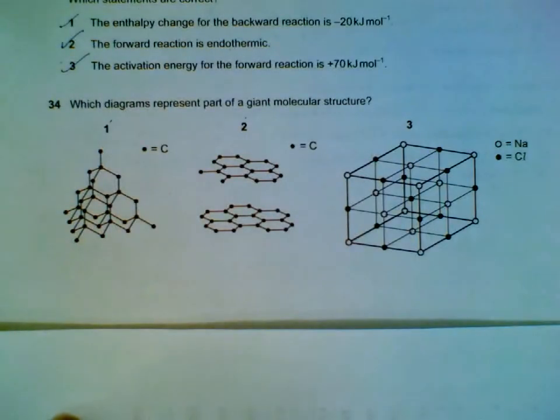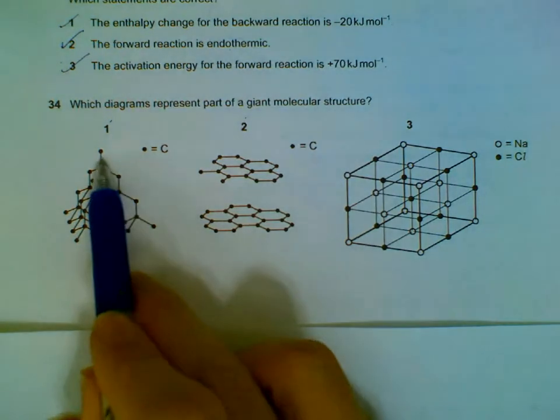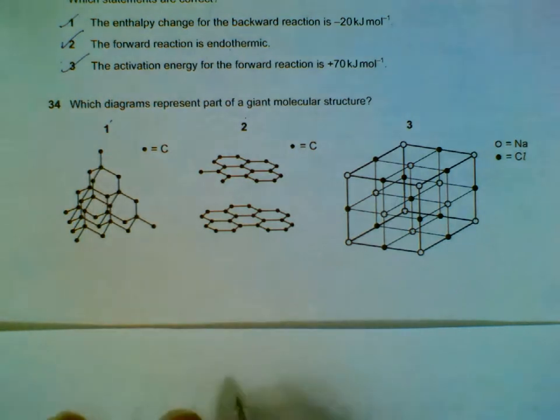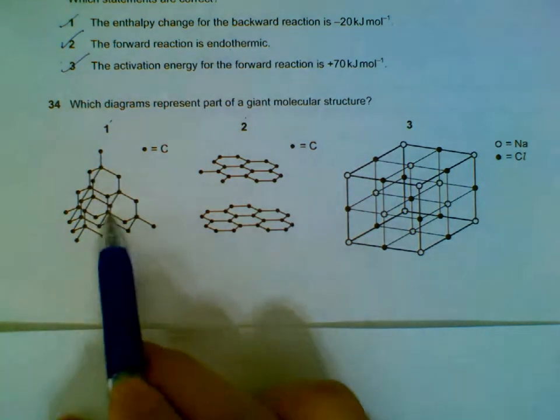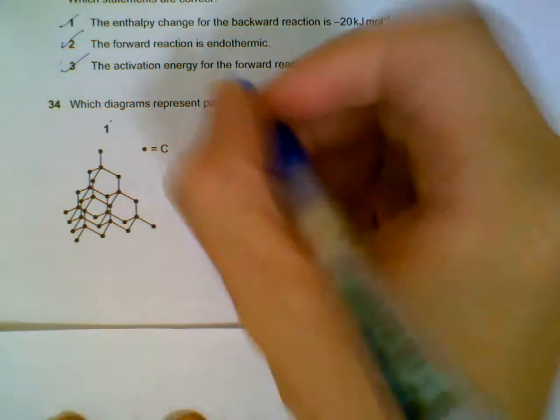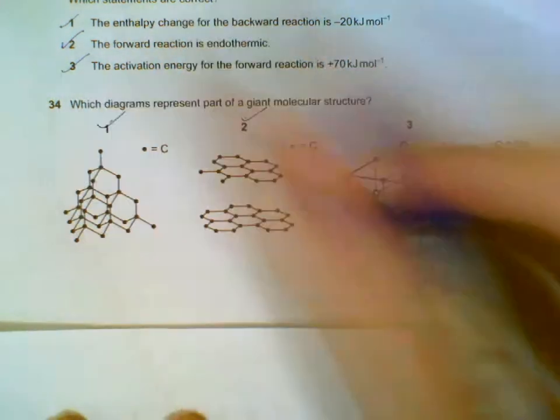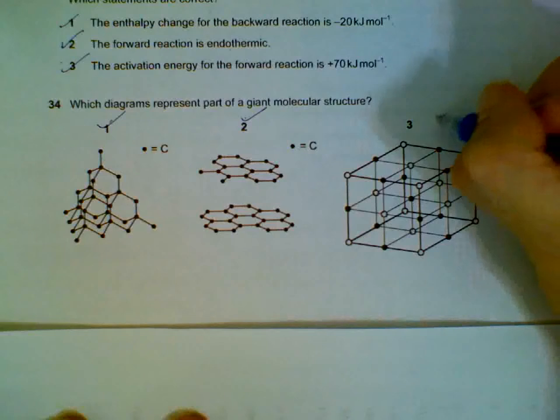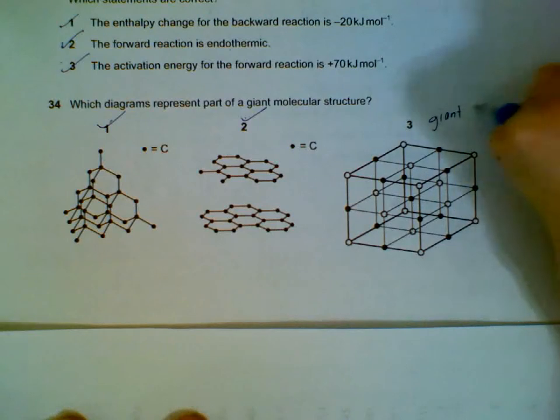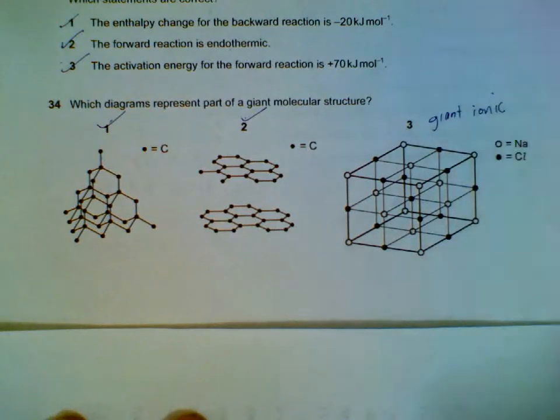Which diagram represents giant molecular structure? That will involve covalent bonds - many covalent bonds joining atoms together. So this is your diamond and your graphite. They are giant molecular. This is giant, but this is giant ionic for sodium chloride.